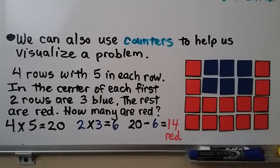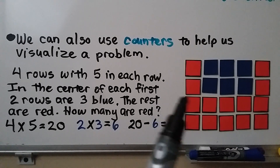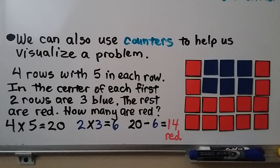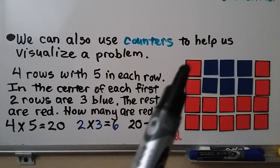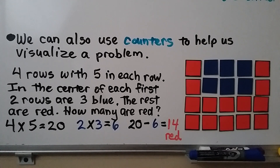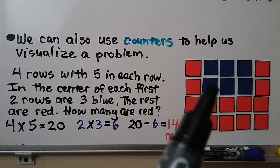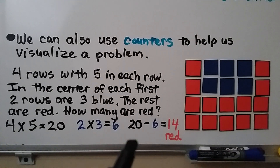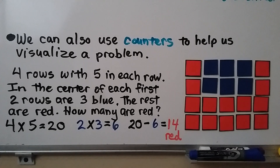We can also use counters to help us visualize a problem. There are four rows with five in each row. In the center of each of the first two rows are three blue counters. The rest are red. How many are red? We have four times five, so that's twenty in all. We have two times three for the blue — that's six. We do all of them, twenty, minus the six blue. We know there are fourteen red ones.